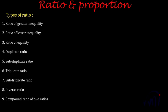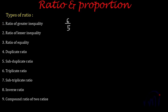In this video we will learn about different types of ratios. As you can see, I have already listed all of them. The first one is the ratio of greater inequality. Suppose if we have a ratio like 6 by 5, where the antecedent is greater than the consequent — here 6 is greater than 5 — then this is called the ratio of greater inequality.